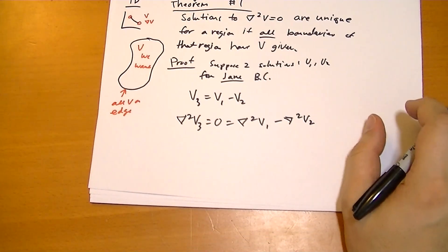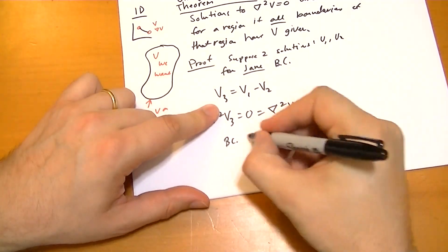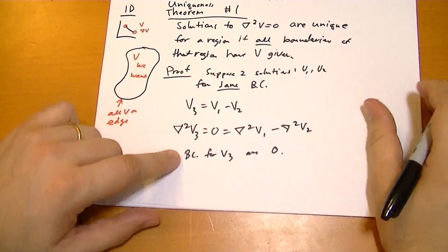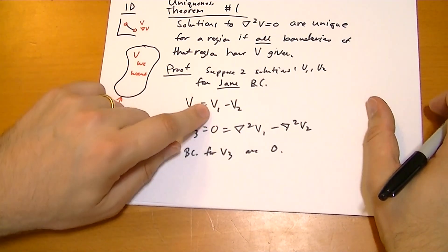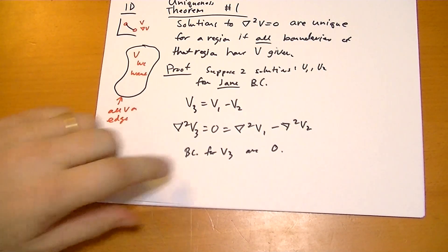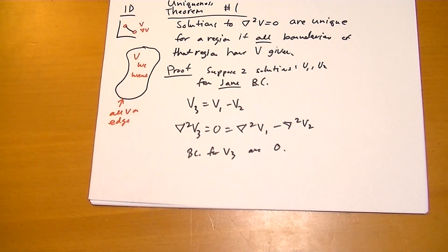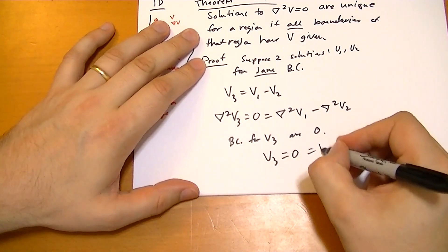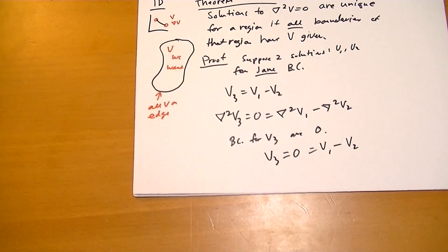Note that the boundary conditions of V3 are zero. That means all around this region, V3 has boundary conditions of zero because it's V1 minus V2, and these guys have the same boundary conditions. The same number minus the same number gives you zero. If V3 has boundary conditions of zero, then the only solution that works is V3 equals zero. If V3 equals zero, then the difference between those two is zero. These must be the same. That's basically what the proof looks like.